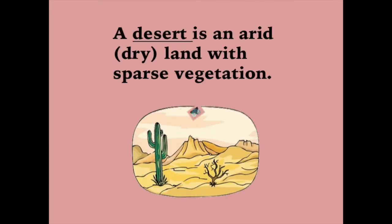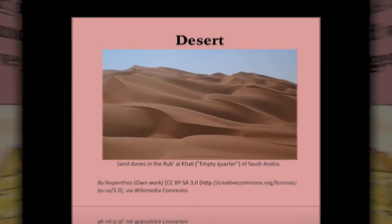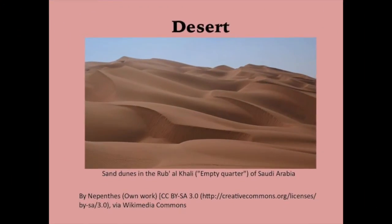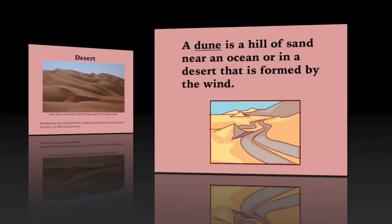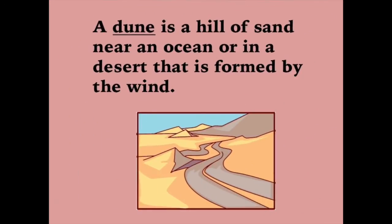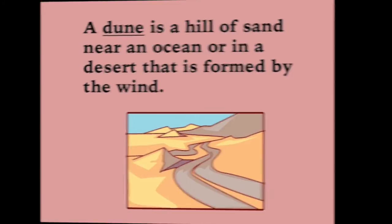A desert is an arid or dry land with sparse vegetation. A dune is a hill of sand near an ocean or in a desert that is formed by the wind.